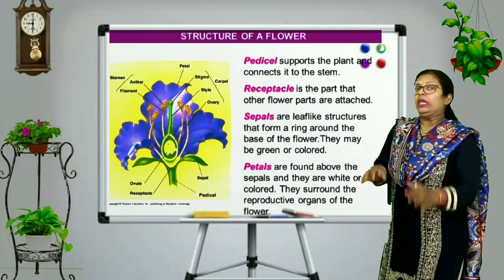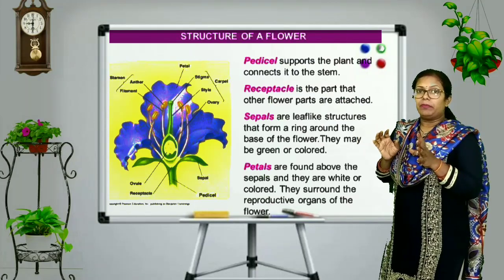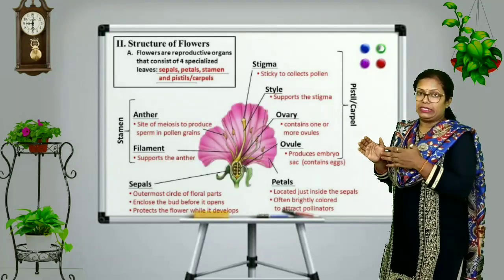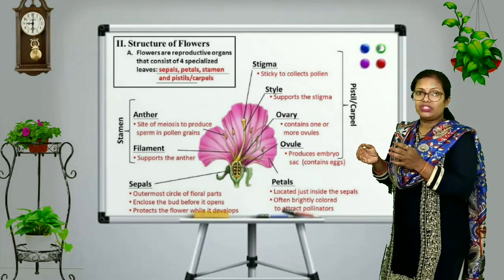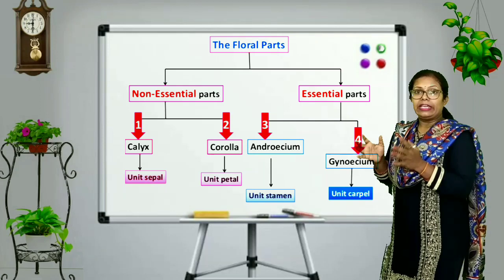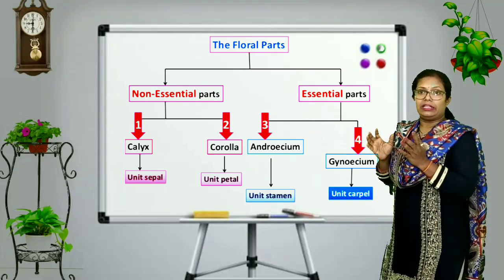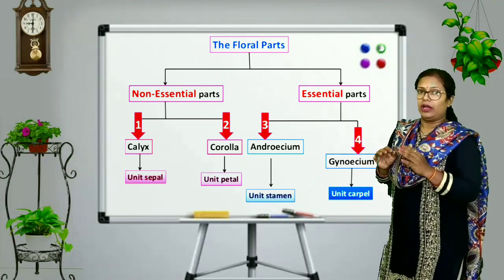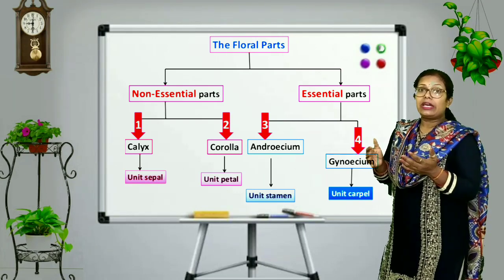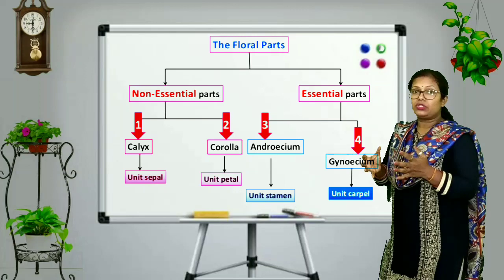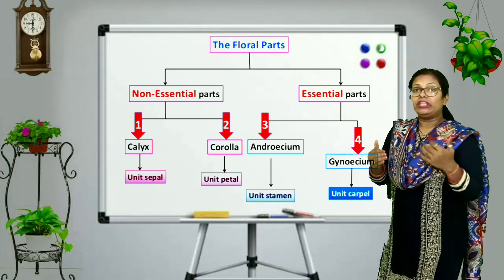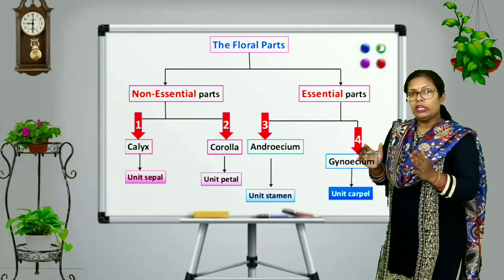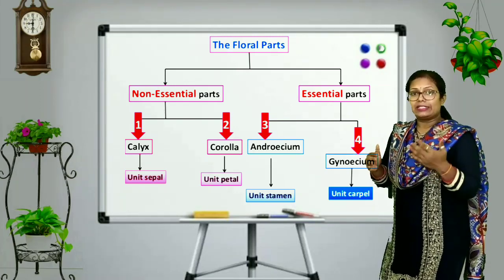After sepals, some colourful leaf-like structures are present, and these are known as petals. These are colourful, thin, and attractive structures. Sepals and petals are accessory structures — helping structures of flowers. They attract insects and other animals towards themselves, and help in the process of pollination.